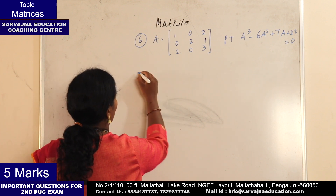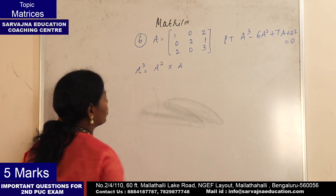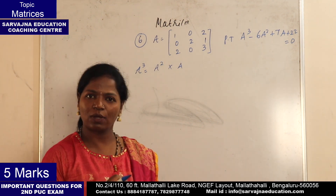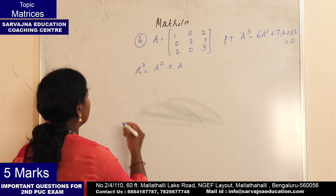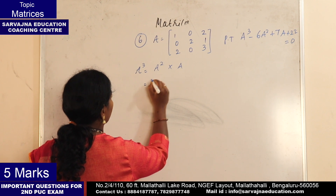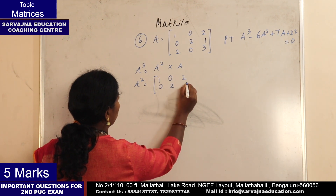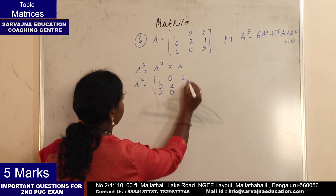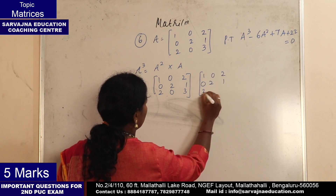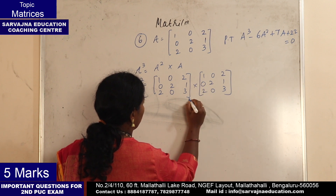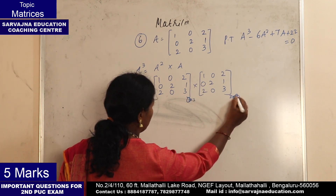So first A cube - you can start A cube, so it is A square into A. First compute A square into A square. The matrix A is: row 1: 1, 0, 2; row 2: 0, 2, 1; row 3: 2, 0, 3. This is 3 cross 3, and the answer will also be 3 cross 3.